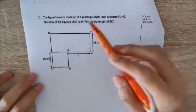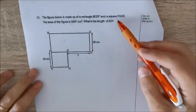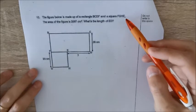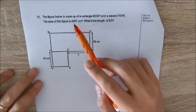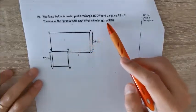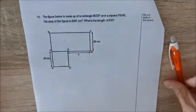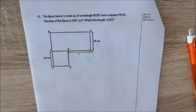Okay, question 10. The figure below is made out of a rectangle BCDF and a square FGHE. The area of the figure is 2097 square centimeters. What is the length of ED? Okay, so this is ED which is the one that we want to find.